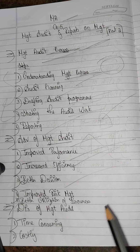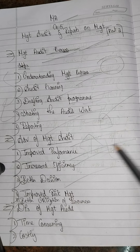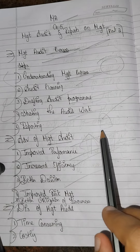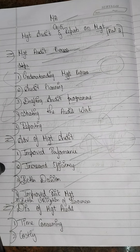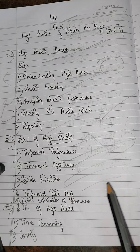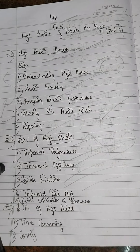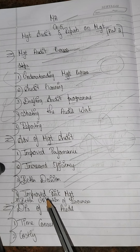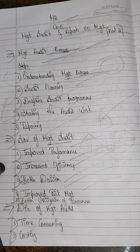Better decision-making — auditing helps the company make better decisions regarding increases and decreases. Risk management is improved, along with better utilization of resources.